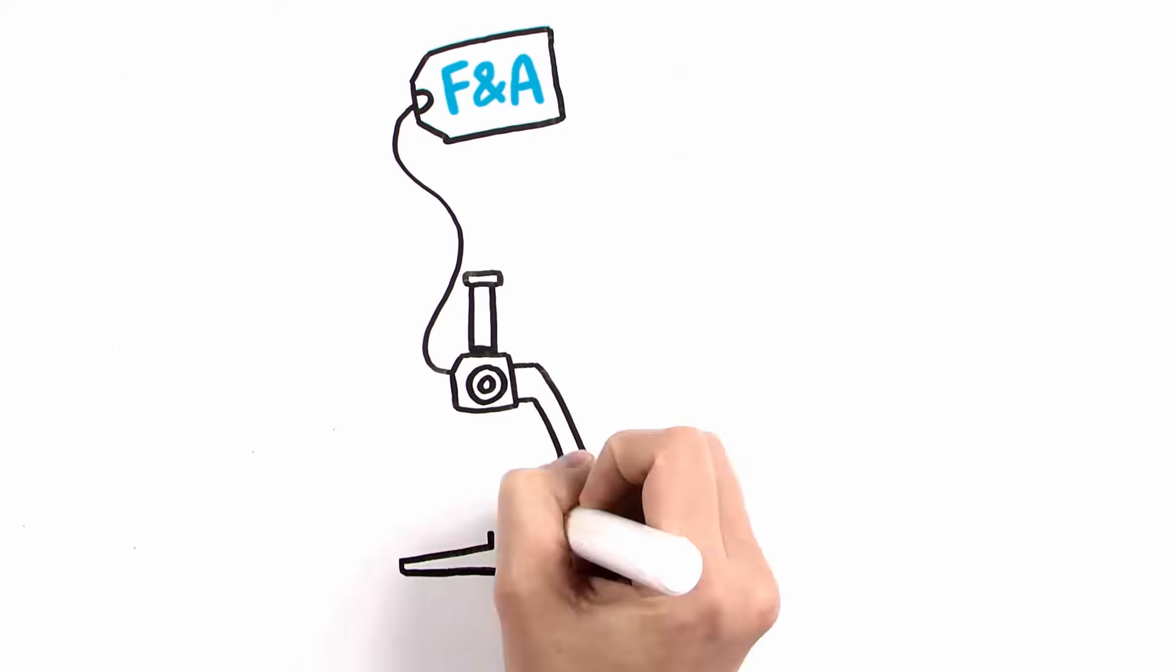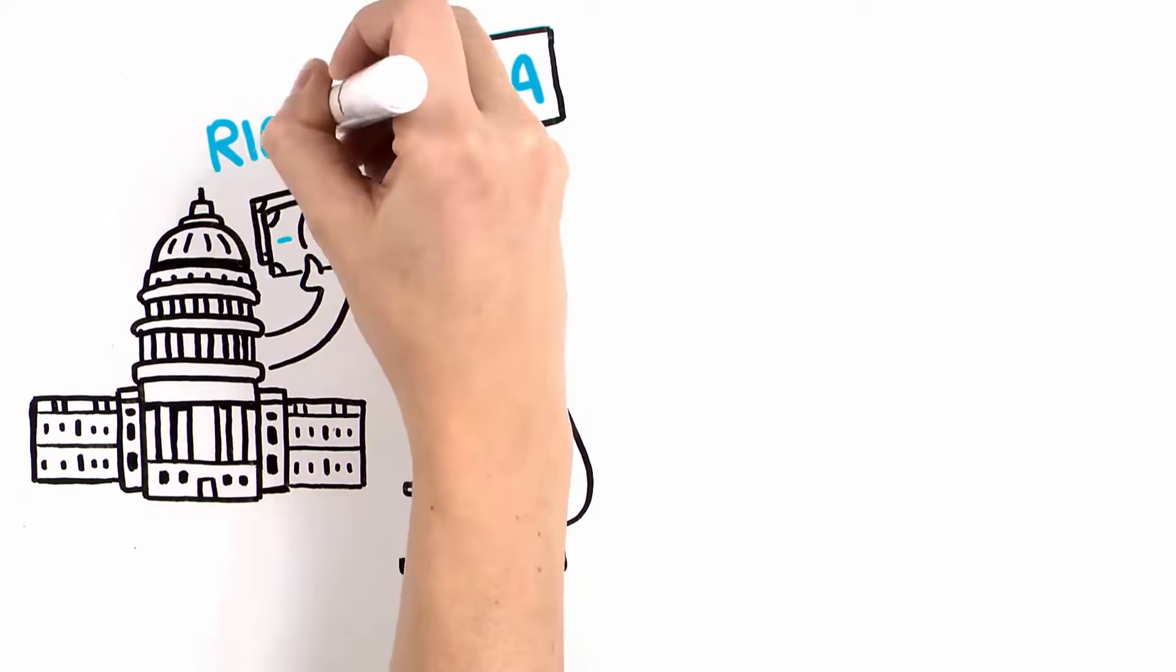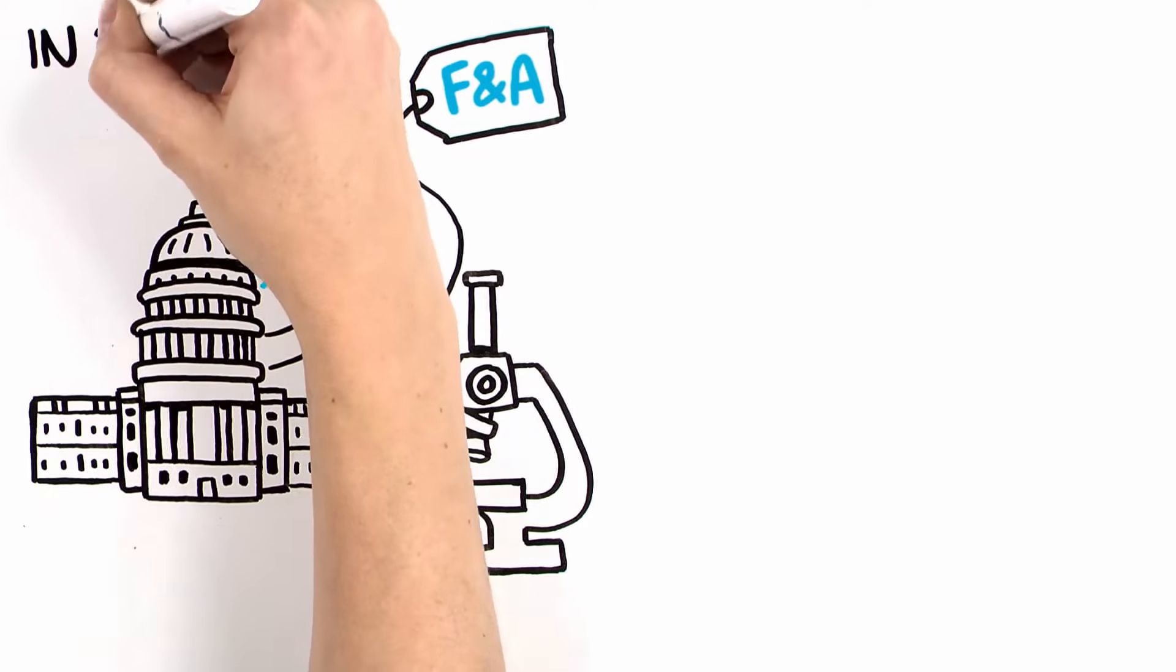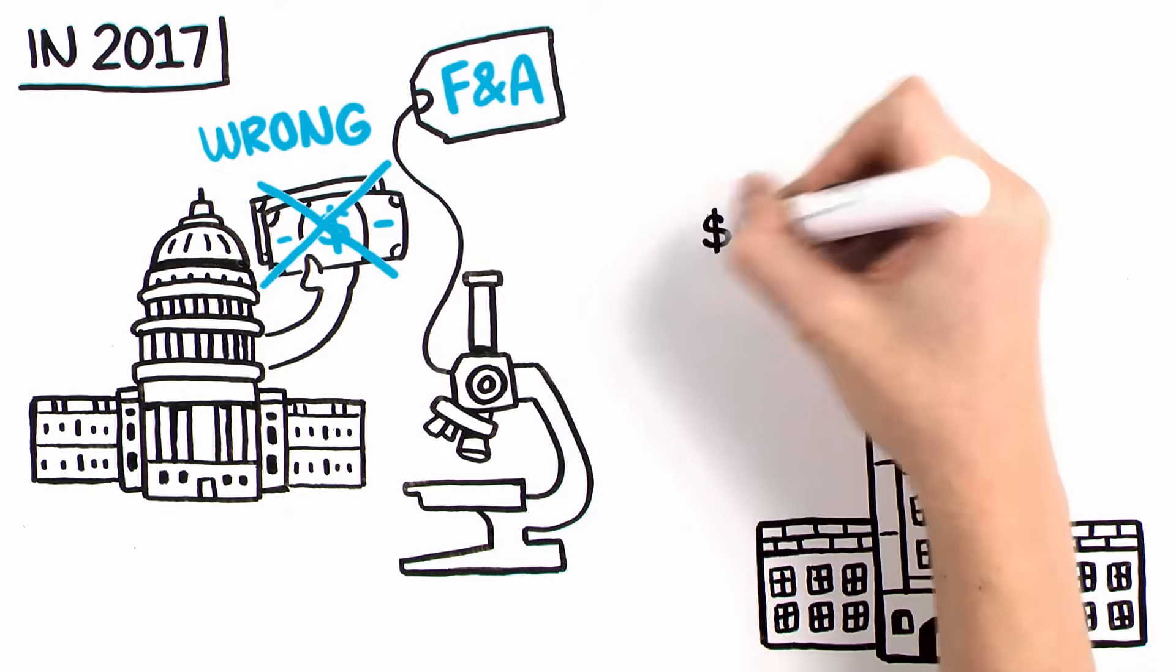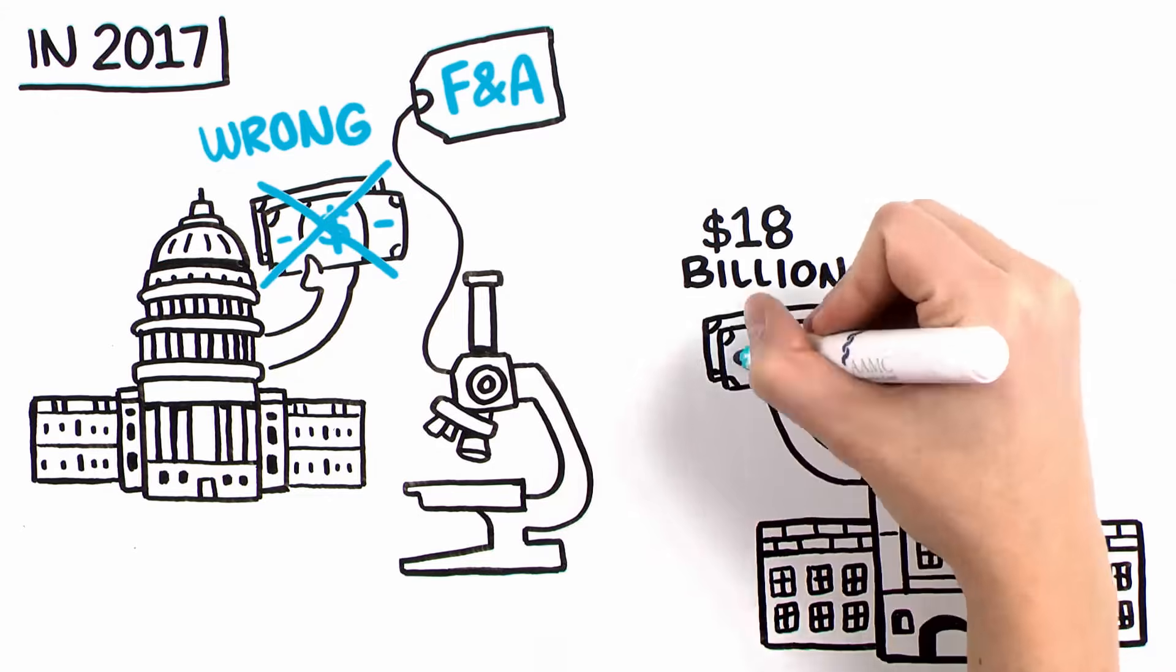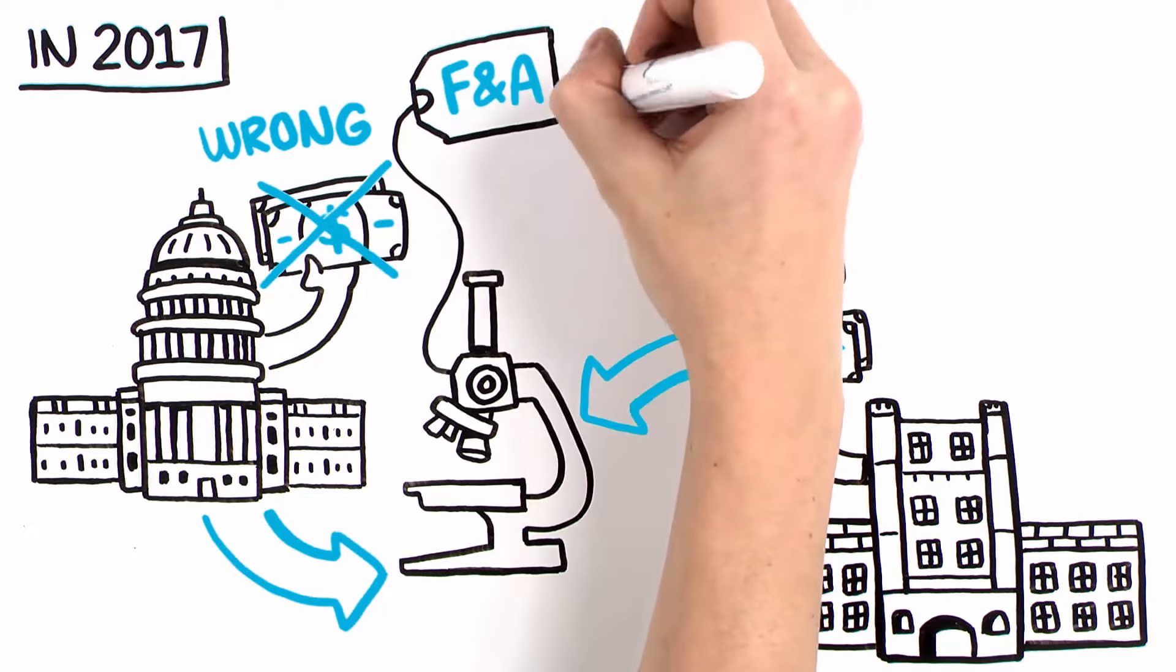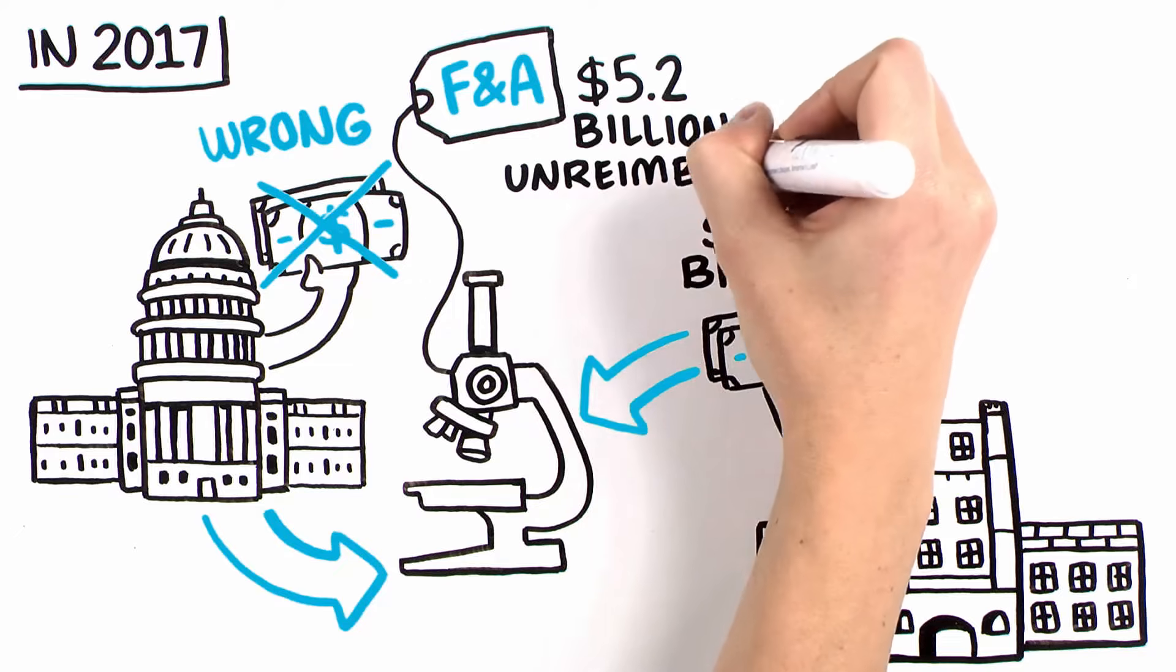These F&A costs are an essential part of the price of doing research. And the federal government covers all these costs, right? Wrong. Federal data show that in fiscal year 2017, colleges and universities contributed approximately $18 billion of their own institutional funds to support research on top of the research funding provided by the federal government. This includes over $5.2 billion for F&A costs that the federal government did not reimburse.